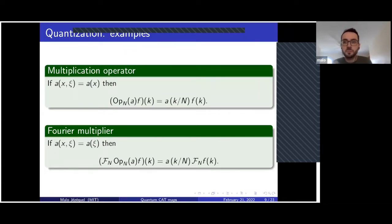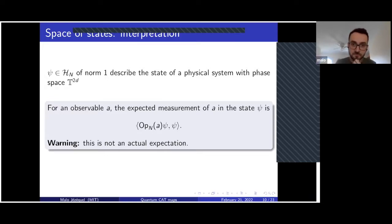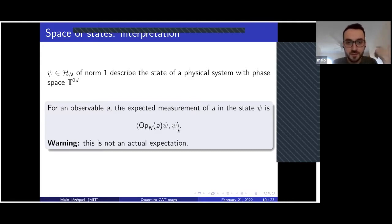So we have a quantization. But what do we want to do with that? If you have an element of norm one in your Hilbert space, this describes a physical system whose phase space is the 2d-dimensional torus. If you have an observable A, you can make a measurement of A. The expected value you are supposed to get for this measurement is given by the quadratic form associated to A applied to your state Psi. We think of this like a probability measure associated to Psi, but it is not a probability measure — it is a priori not a positive functional.